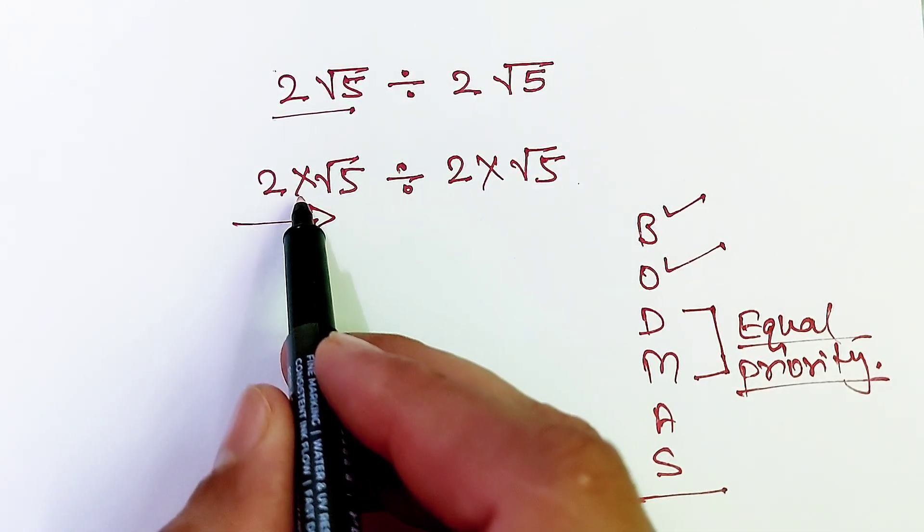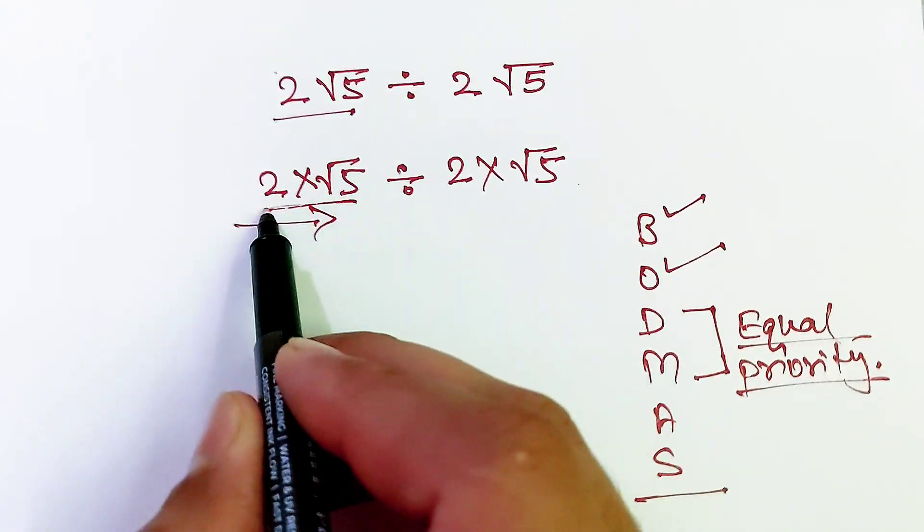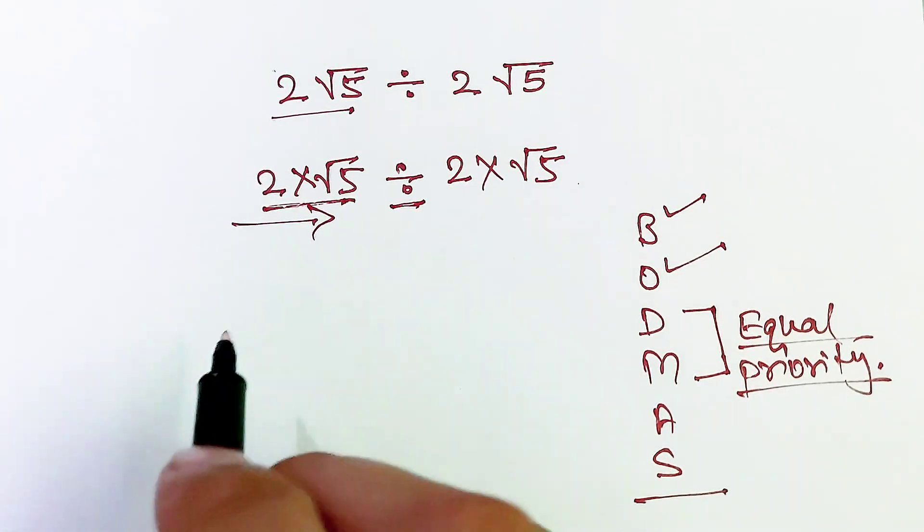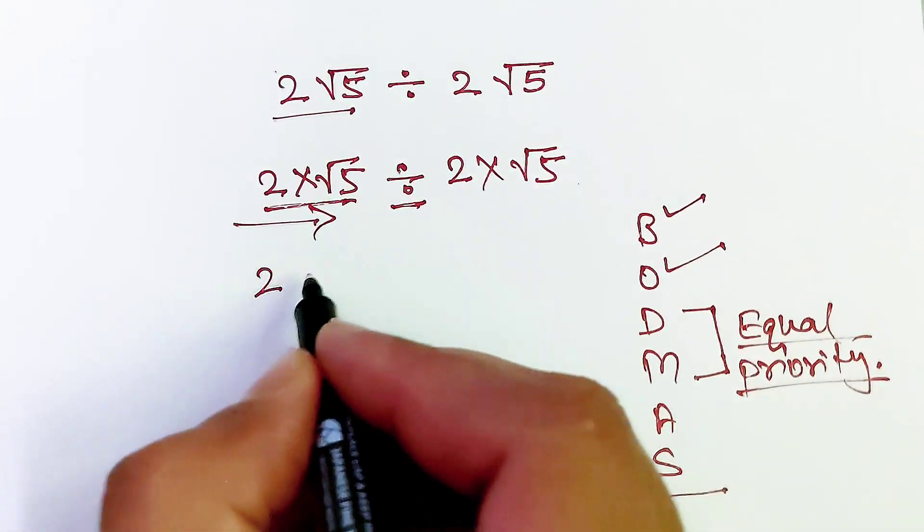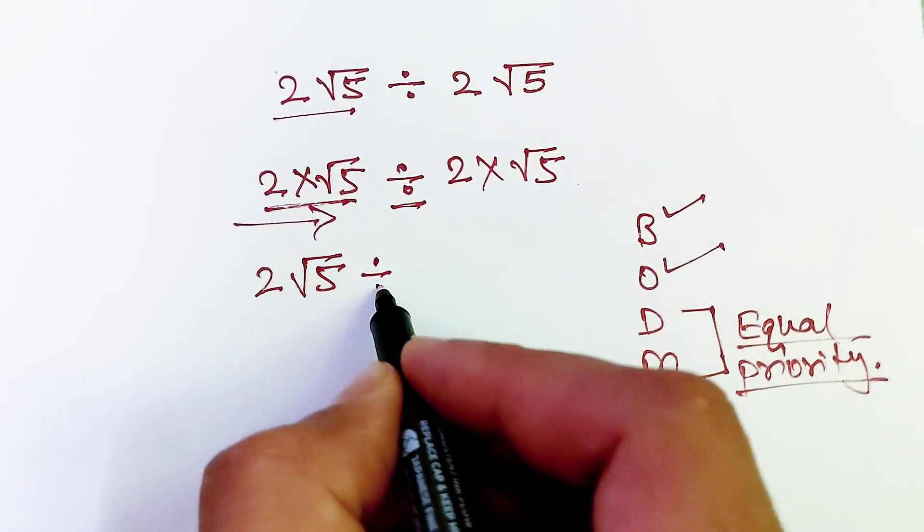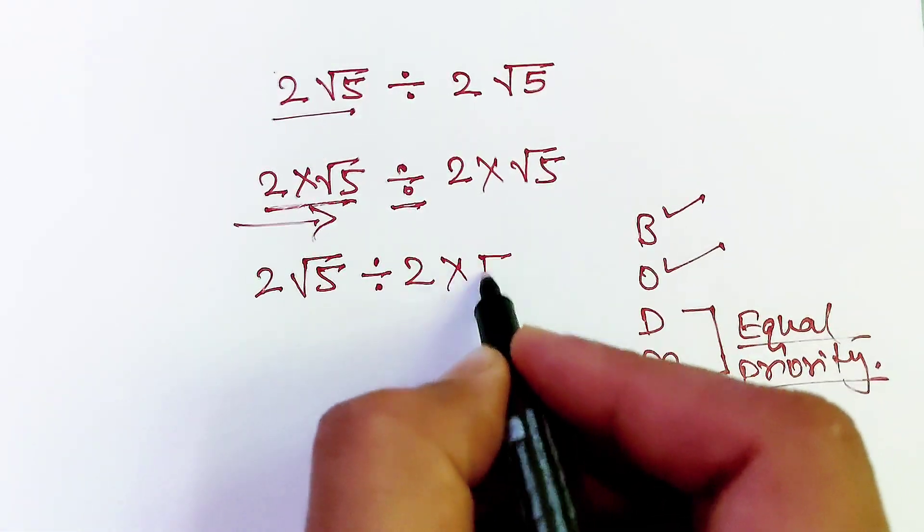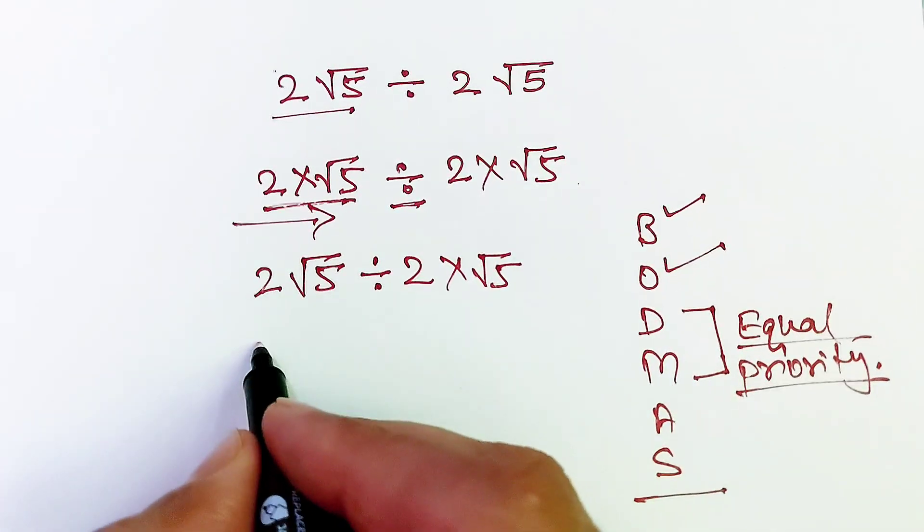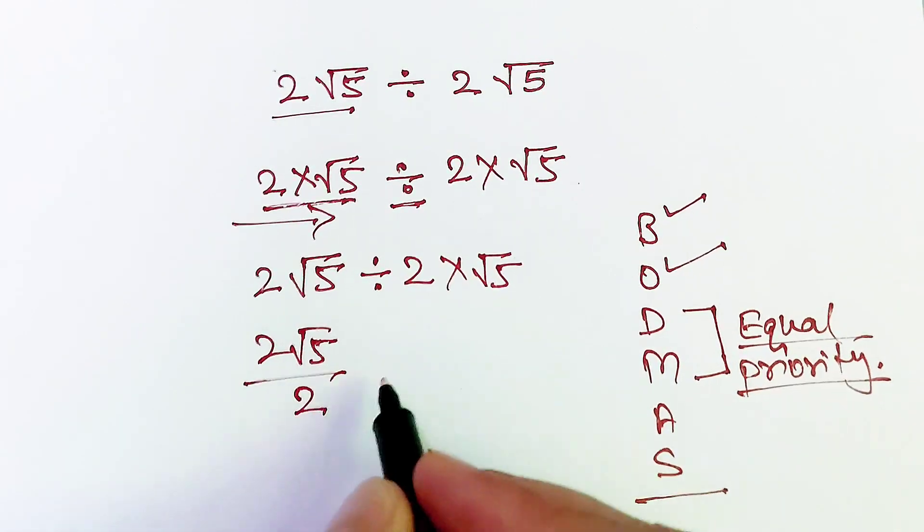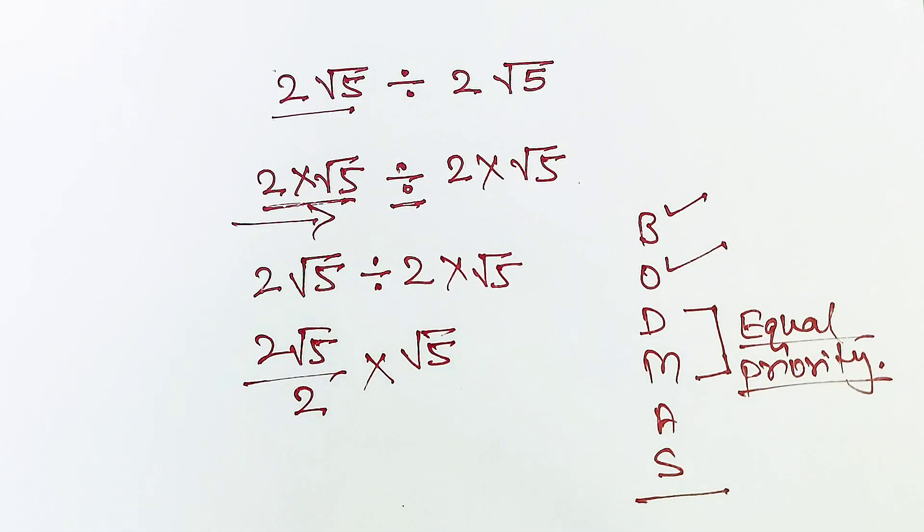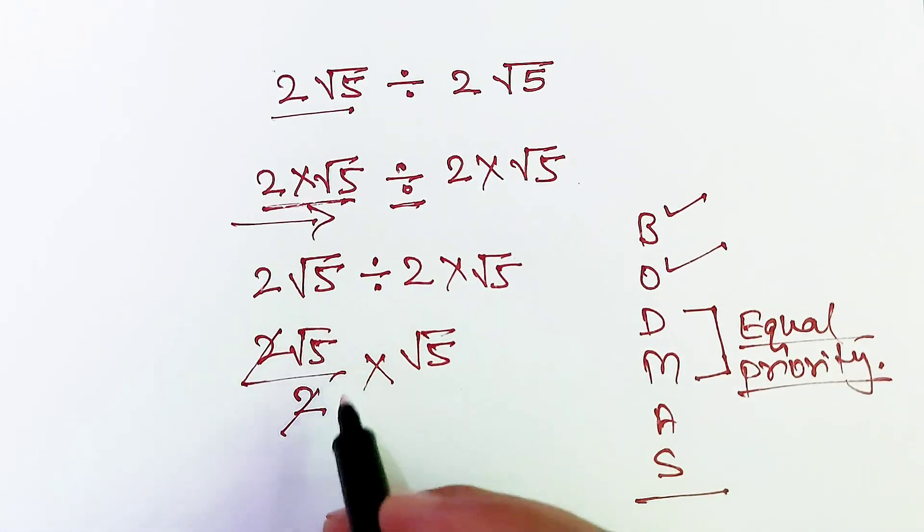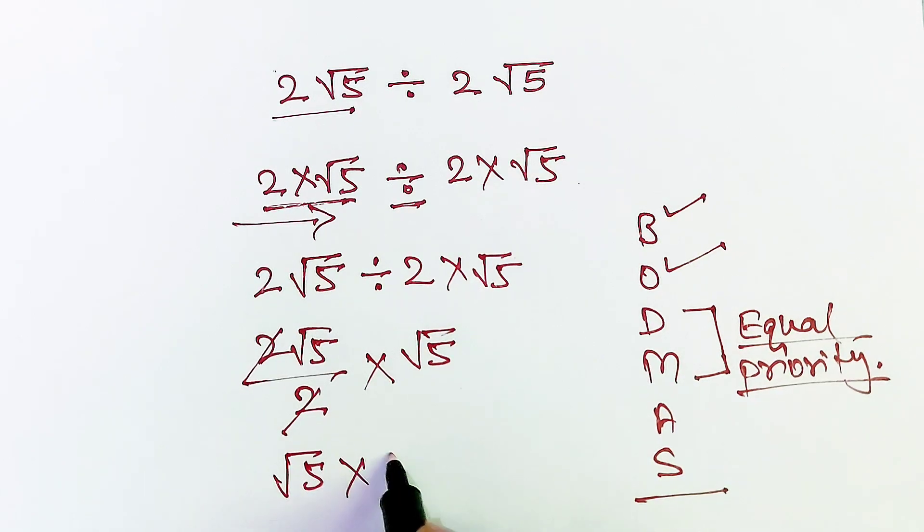Here, multiply sign is coming first, then we will solve this first. So 2 multiply root 5 is equal to 2 root 5, and divide by 2 multiply root 5. Now 2 root 5 divide by 2 and multiply by root 5. Here 2 will cancel out this 2, and root 5 multiply by root 5 which is equal to 5, and that is our final answer.